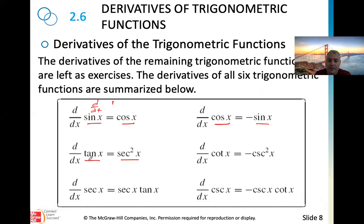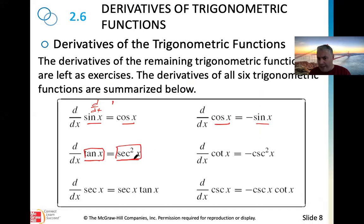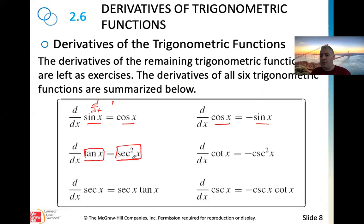So the derivative of tangent of x is secant squared of x. You may memorize this — it is very helpful — but if you forget, you can derive it using sine over cosine and the quotient rule.